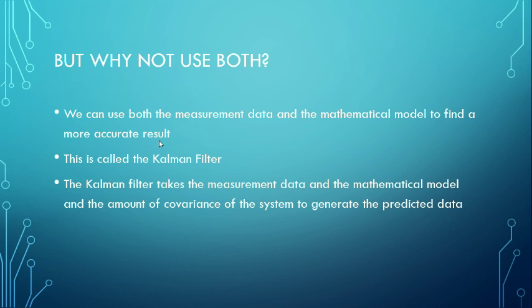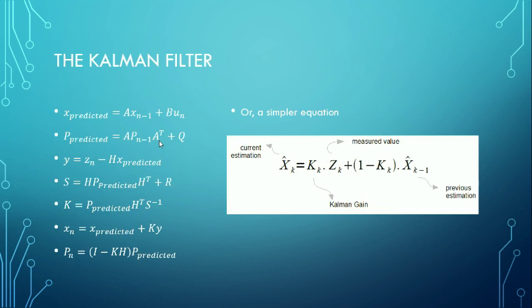Basically, it takes the two sets of data, looks at the amount of noise in the system, and determines which data set to trust more, taking a weighted average, which we'll see in the next slide. This presentation will continue in the next video.